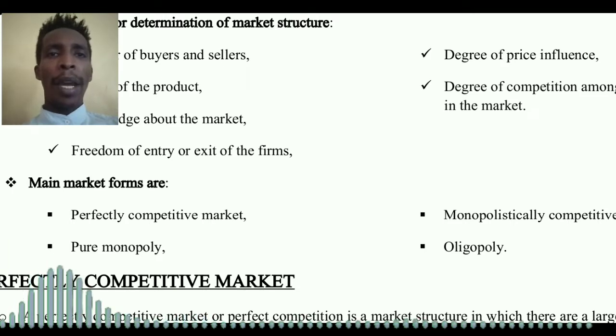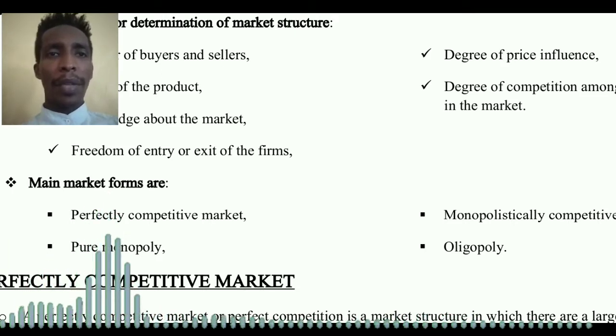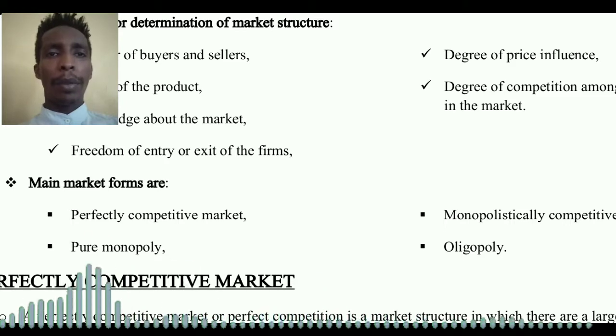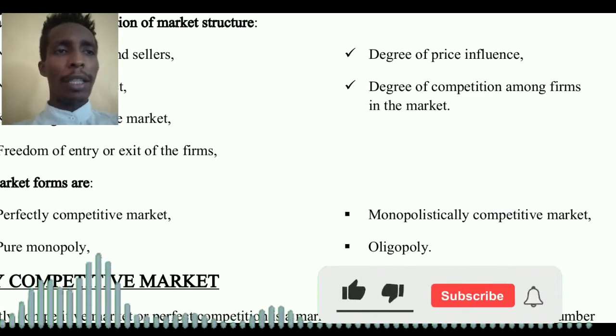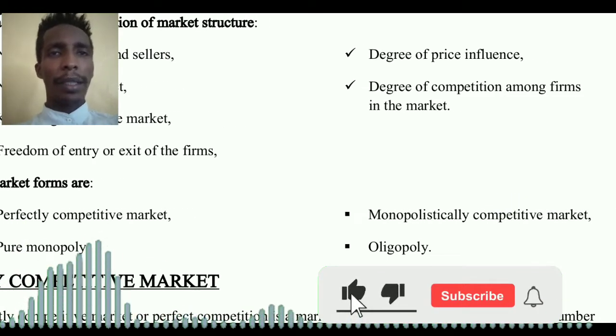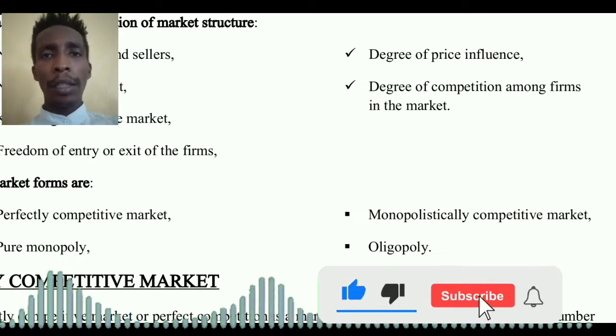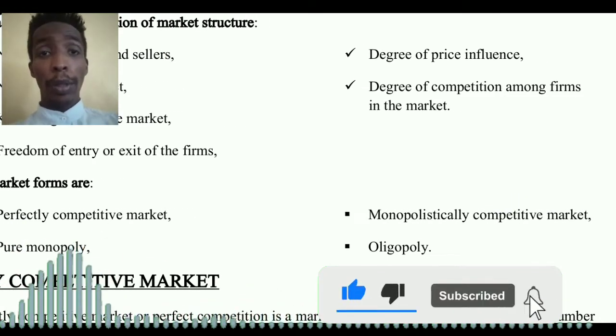The main forms of market structure are: perfectly competitive market, pure monopoly, monopolistic competition, and oligopoly.